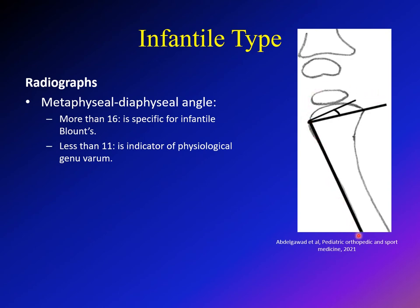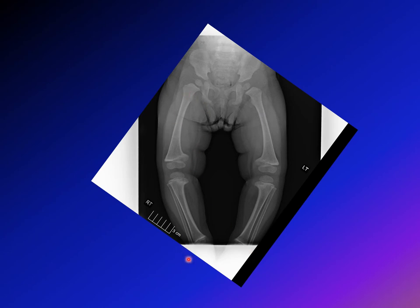Here is an 18-month-old presenting with obvious bilateral genovarum. We draw the metaphysial-diaphysial angle to determine if this is physiologic or Blount disease — because for physiologic genovarum you reassure the family and wait, while for Blount disease you apply braces. On one side the angle between the diaphysis line and metaphysis line is 72 degrees, meaning the metaphysial-diaphysial angle is 17.2 degrees — more than 16, indicating Blount disease.